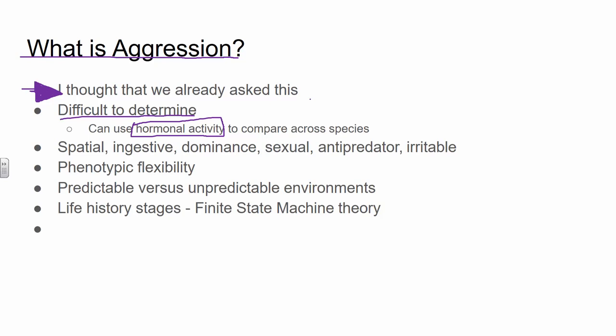The authors define different types of aggression in an interesting way. They have what they call spatial aggression — that's territory defense or territory related. Some of these types of aggression can clearly overlap. They also have another one related to ingestive resources, so thinking about food and water. We see an overlap there already — territory can have access to these resources. Some of these things overlap, some don't.